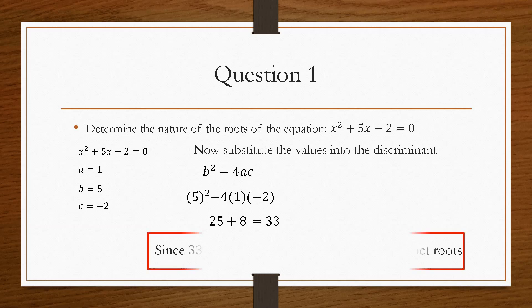Now the way that we express our final answer is we say that since 33 is greater than zero, i.e. is a positive value, the equation has two real and distinct roots. And that is how you determine the nature of a quadratic equation.